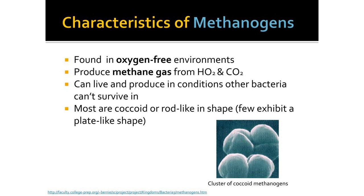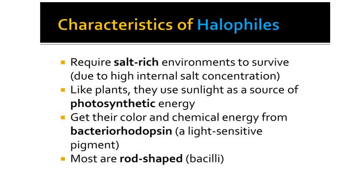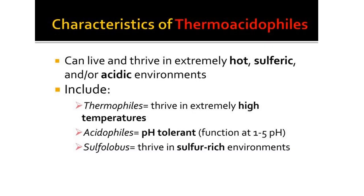Extremely halophilic archaeobacteria are coccoid or irregular-shaped rods, gram-negative or gram-positive. They are primarily aerobic chemo-organotrophs requiring high sodium chloride concentrations for growth. Colonies are of various shades of red. They are neutrophilic or alkalophilic in nature — mesophilic, neutrophilic, or alkalophilic, and mesophilic or highly thermophilic. Some species contain bacteriorhodopsin and use light for ATP synthesis.